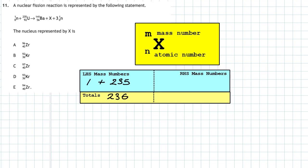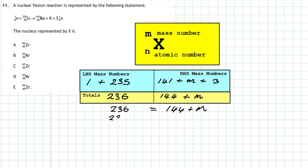On the right-hand side we have barium with mass number 141, plus the missing nucleus (given symbol M), plus three neutrons (adding 3). So the right-hand side totals 144 + M. Setting 236 equal to 144 + M and subtracting 144 from both sides gives M = 92. So element X has a mass number of 92.